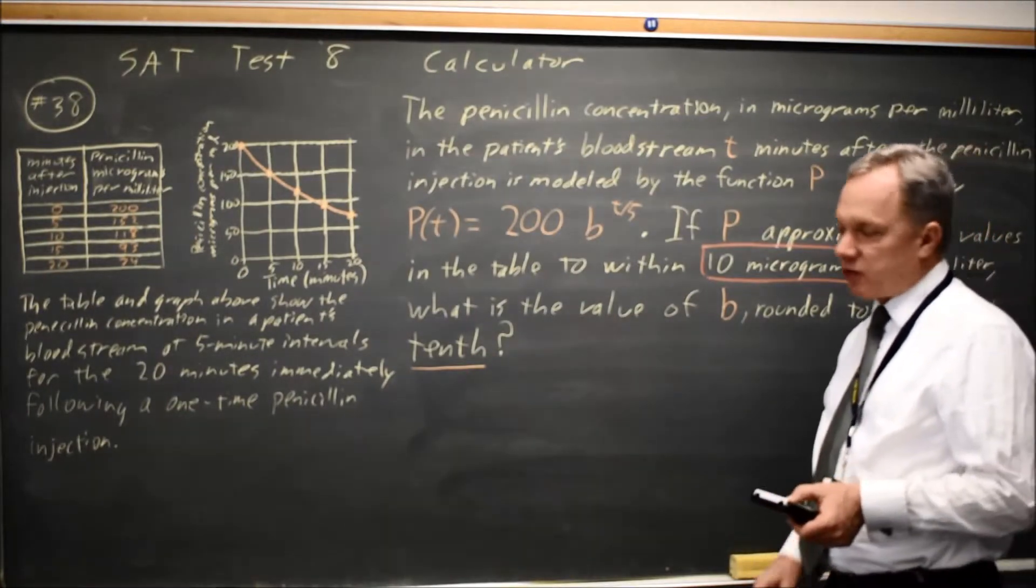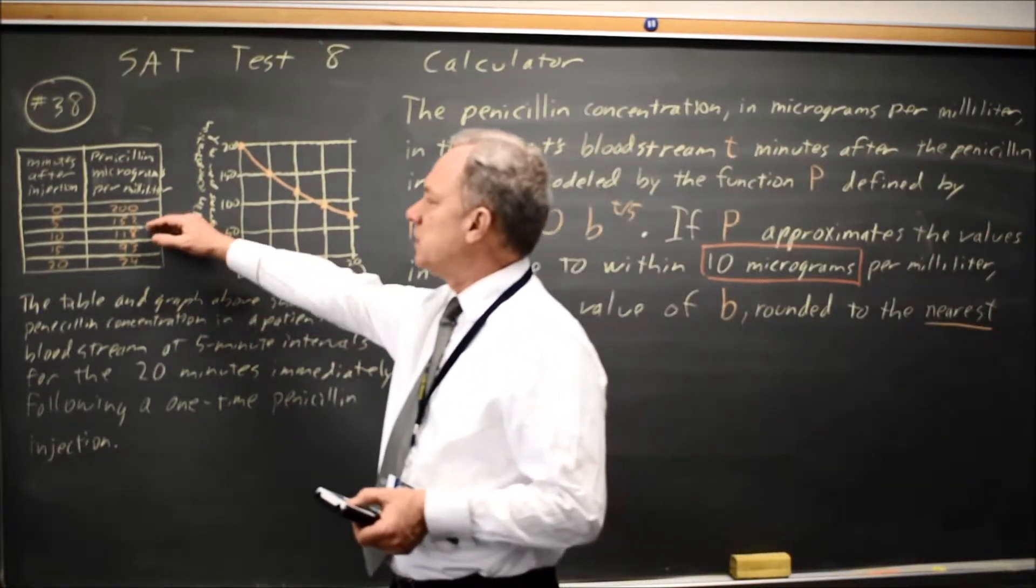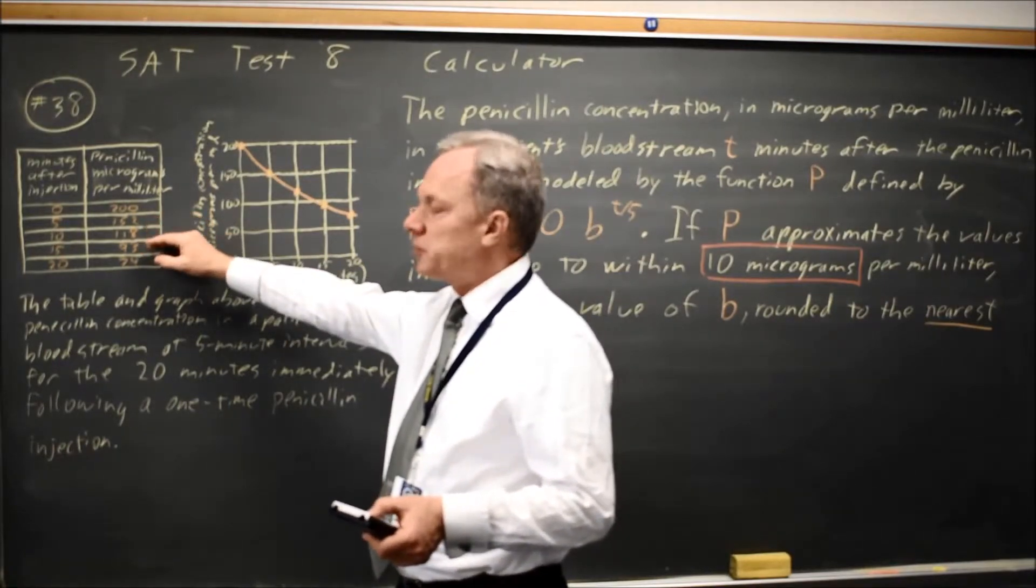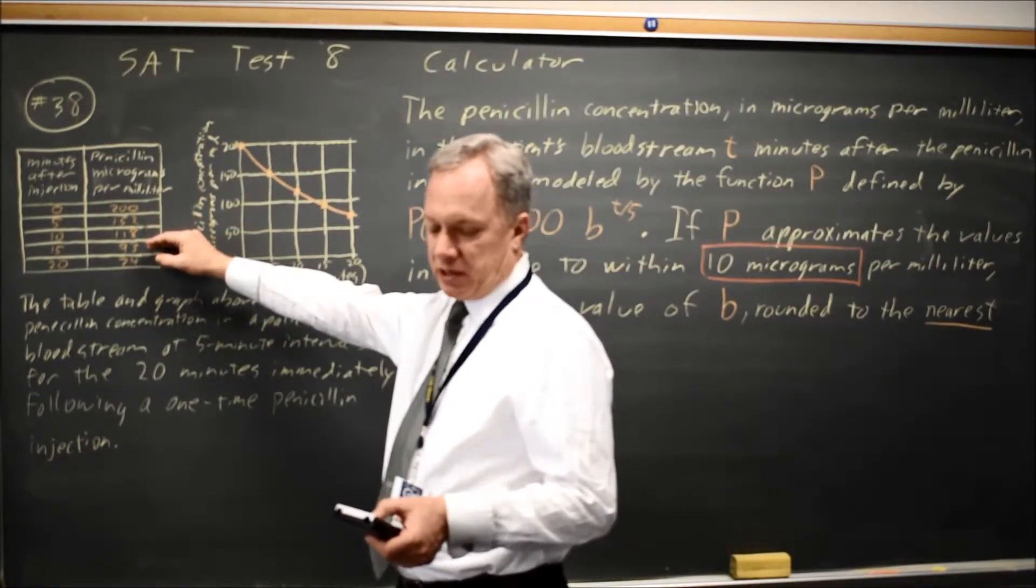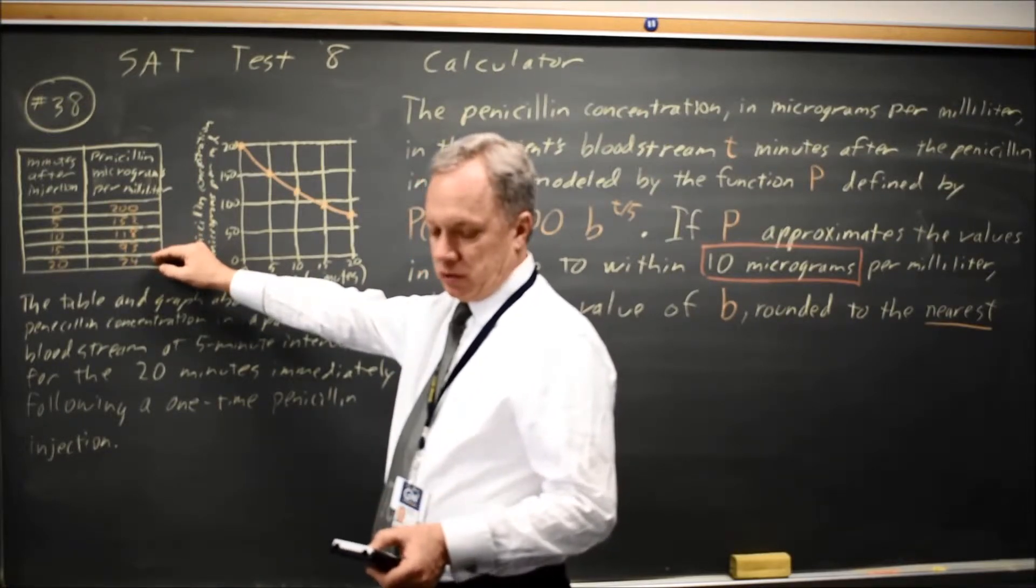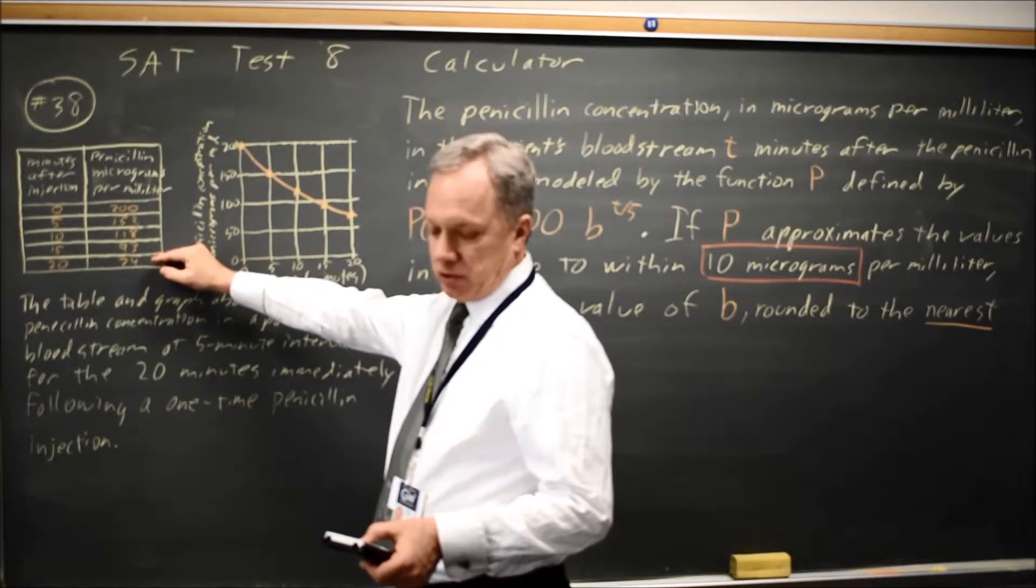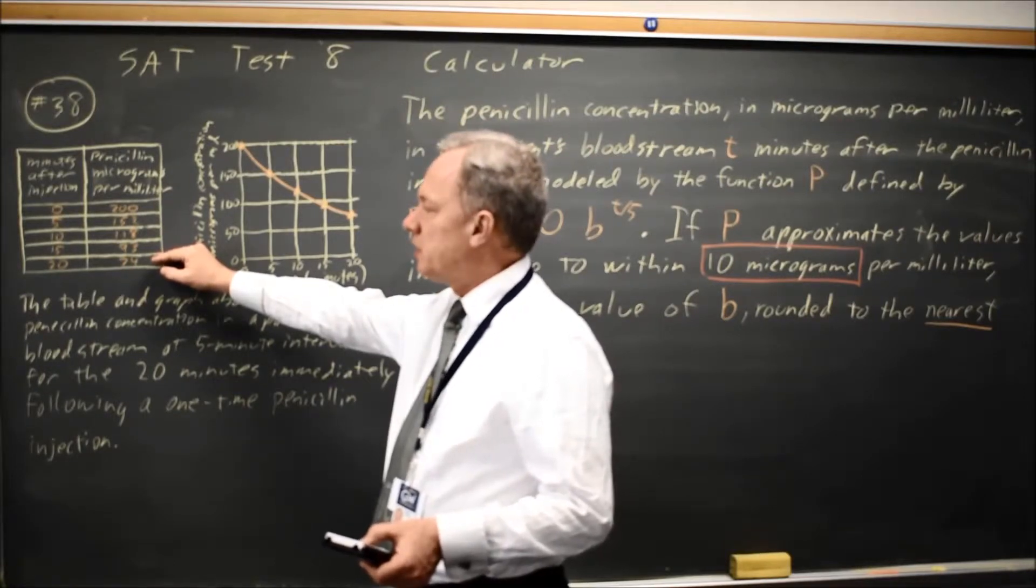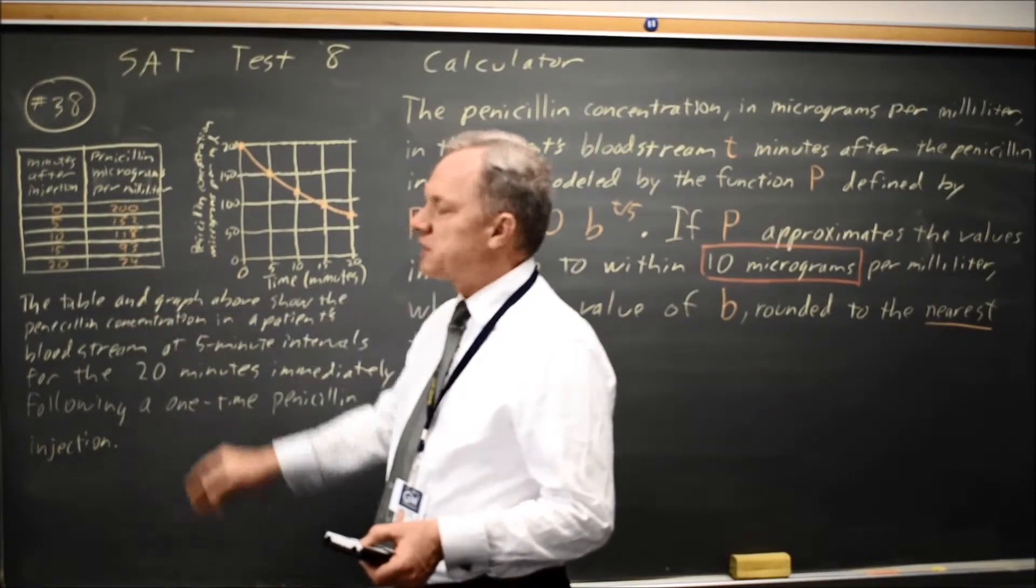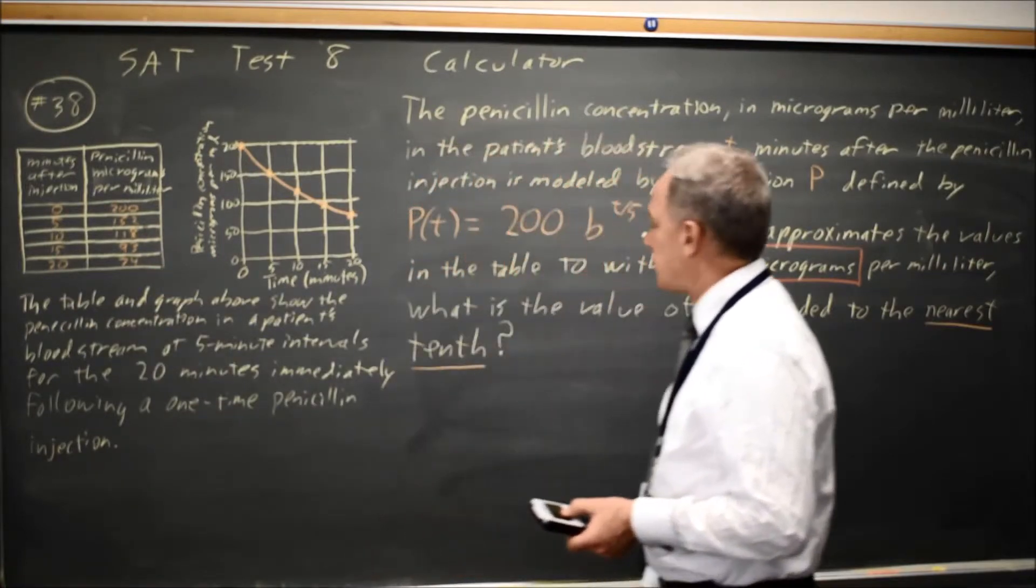Using 0.8, at 5 minutes I get 160, their table is 152, that's within 10. At 10 minutes I get 128, they have 118, I'm within 10. 15 minutes I get 102.4, they have 93, I'm within 10. And in 20 minutes I have 81.9, they have 74. Again, I'm within 10.